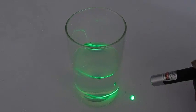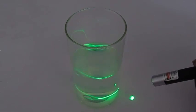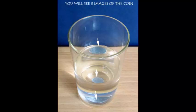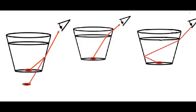Now the reason you see three images is because of three different ways or three different paths the light takes to reach your eyes starting from the coin.